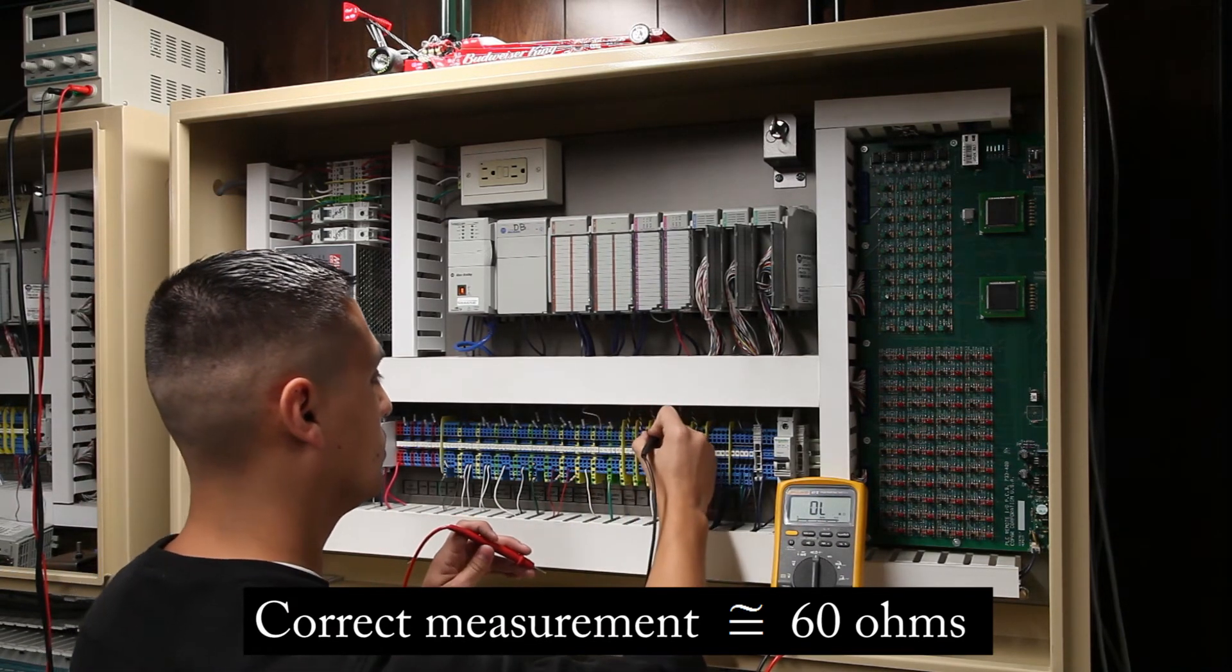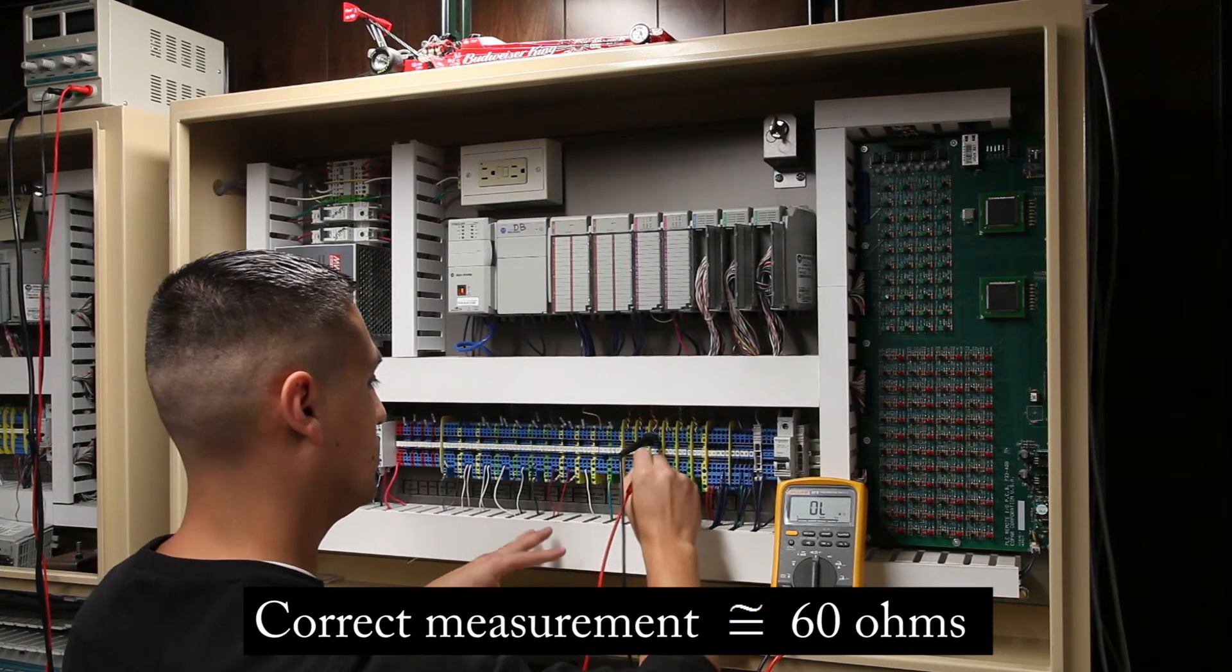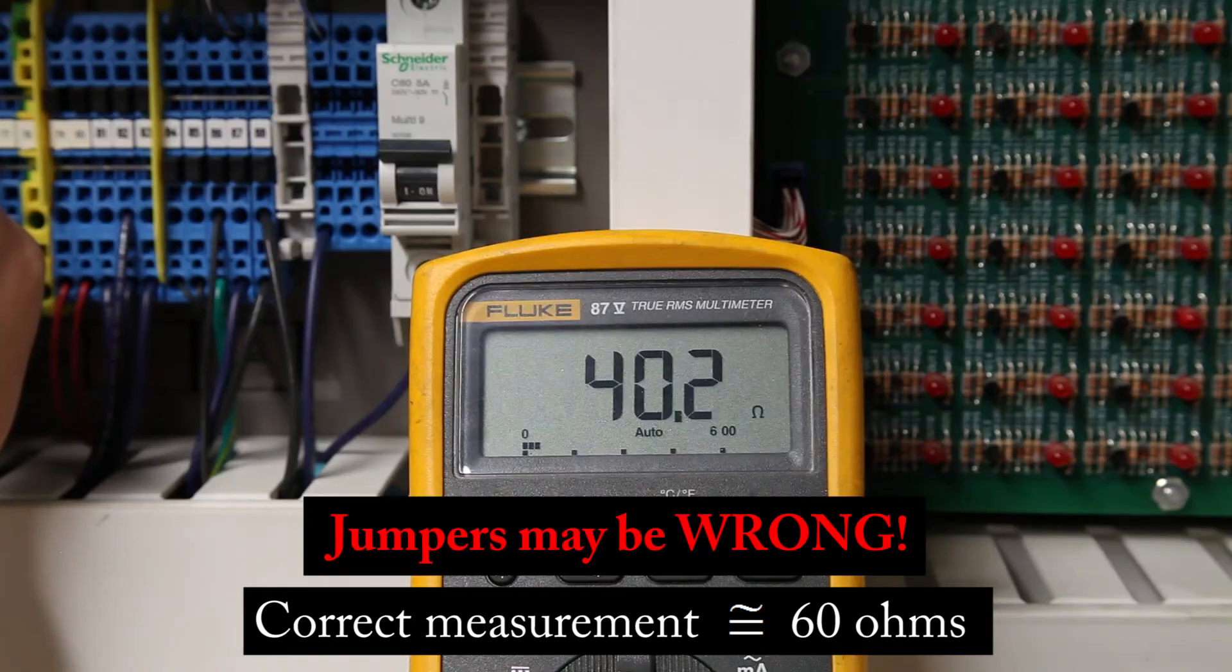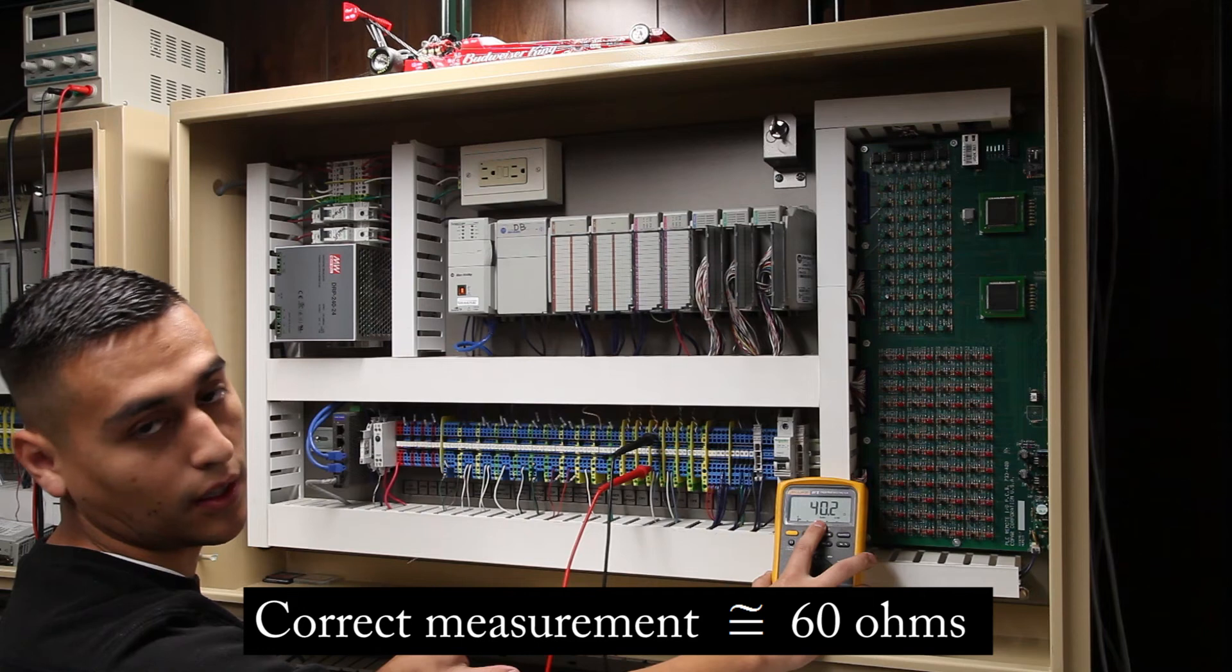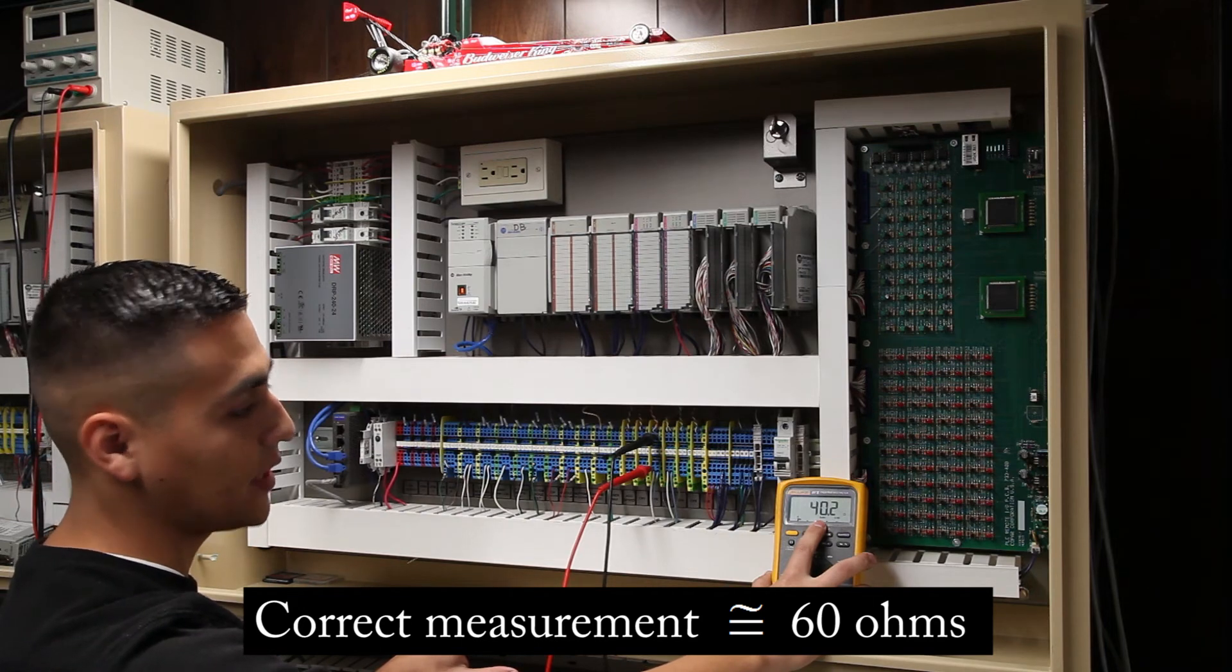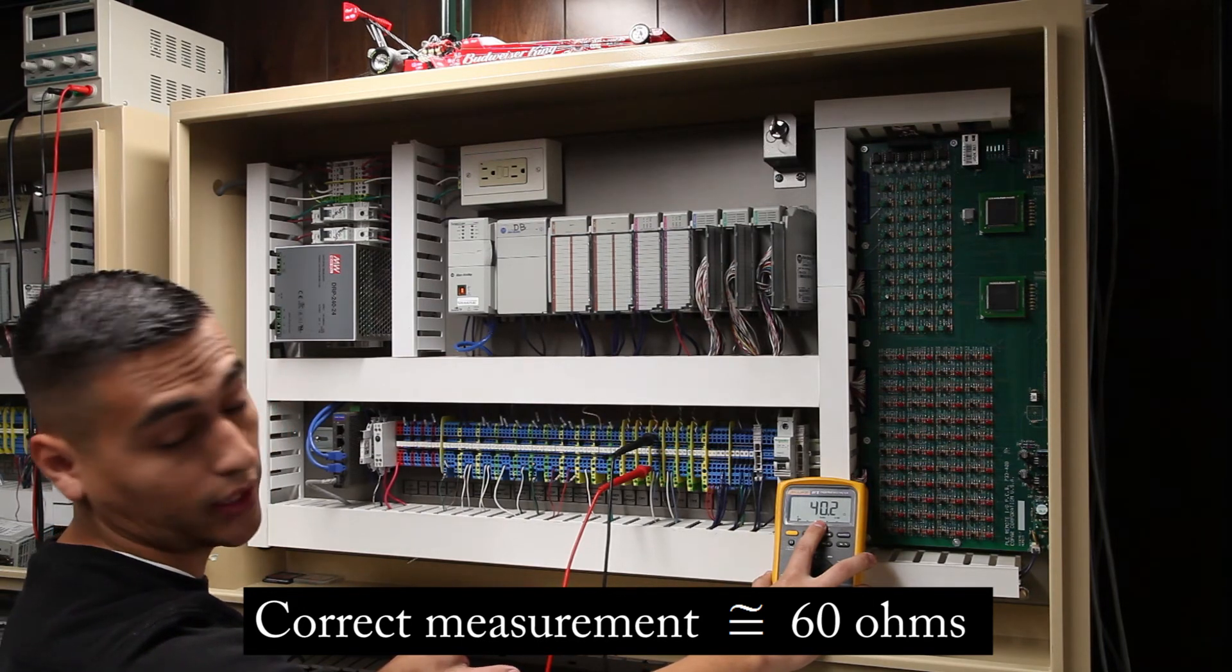On a bad channel, we get a reading of 40 ohms. We shouldn't see that. Again, what we should be seeing is 60 ohms with that terminating resistor at the end of the last string on the D-Net channel.